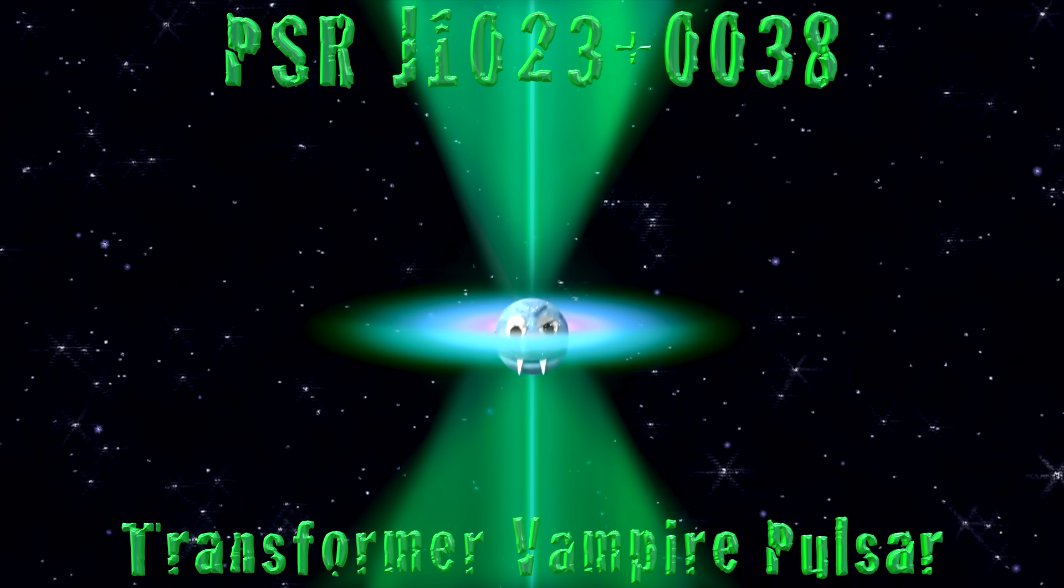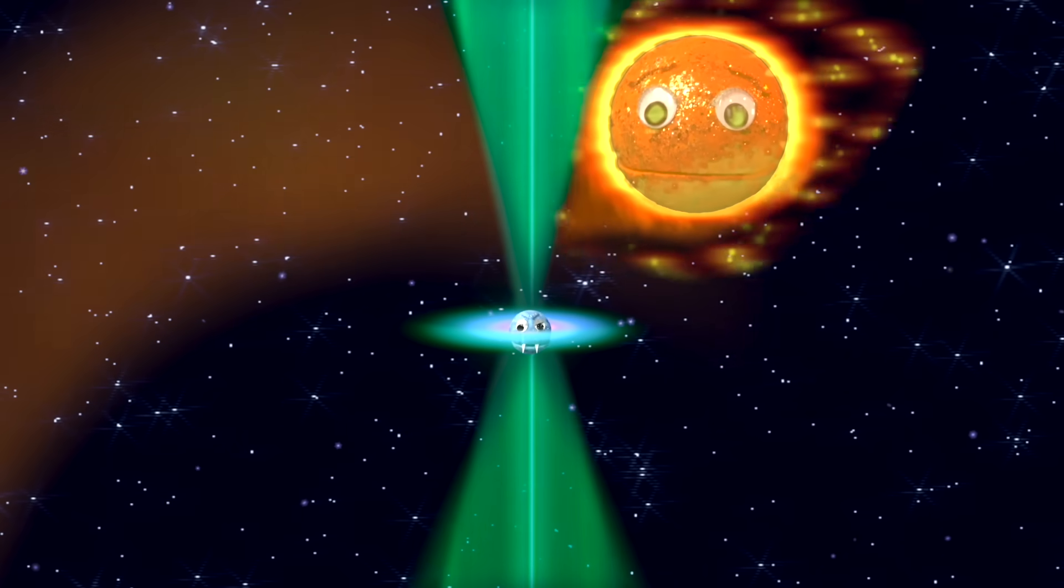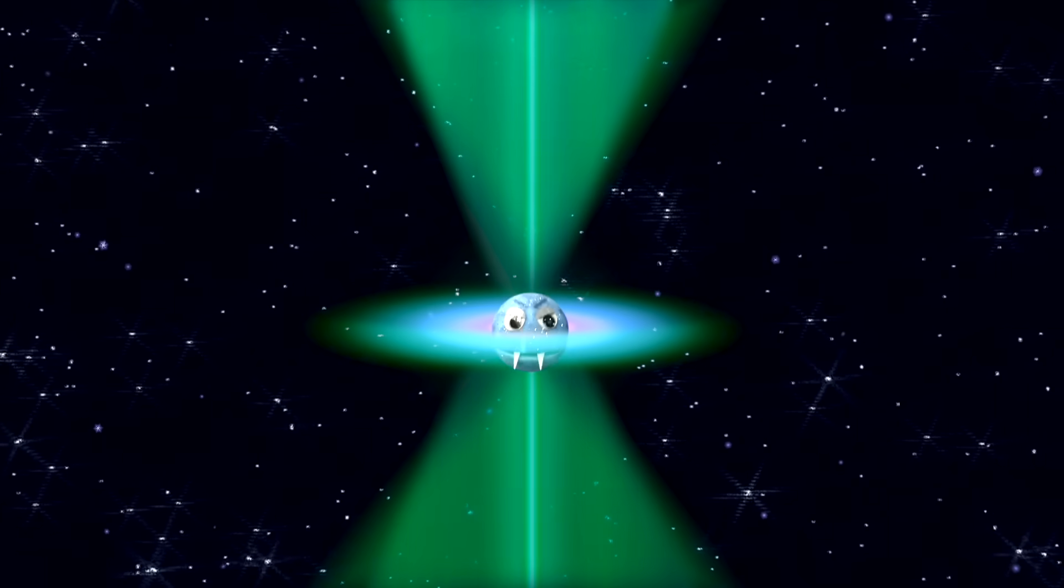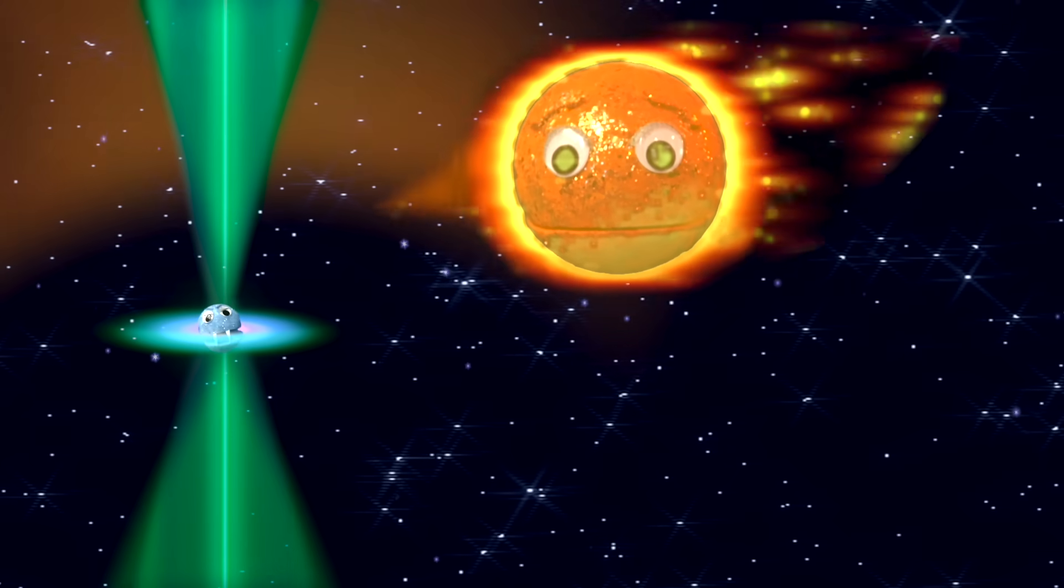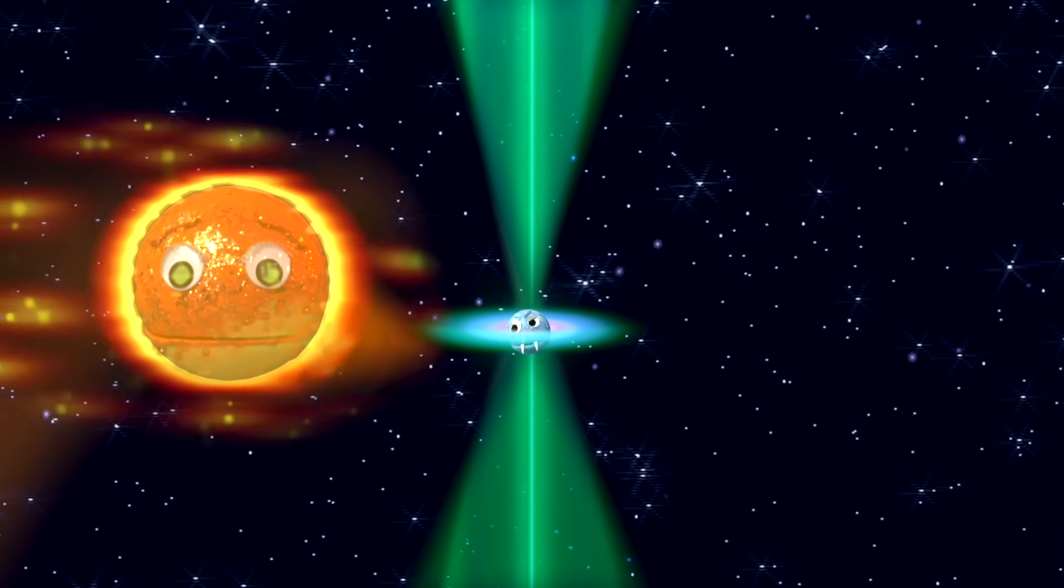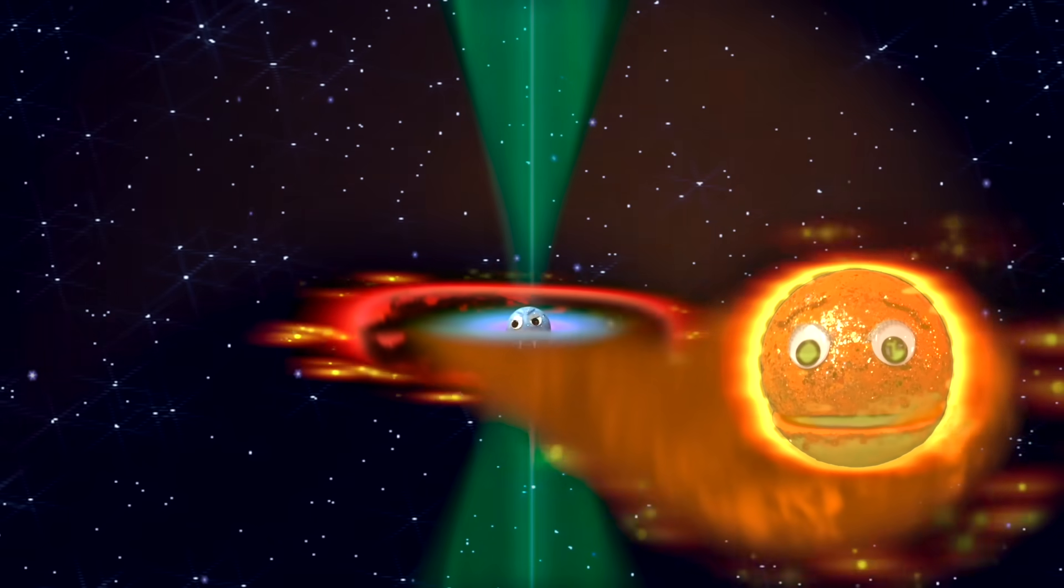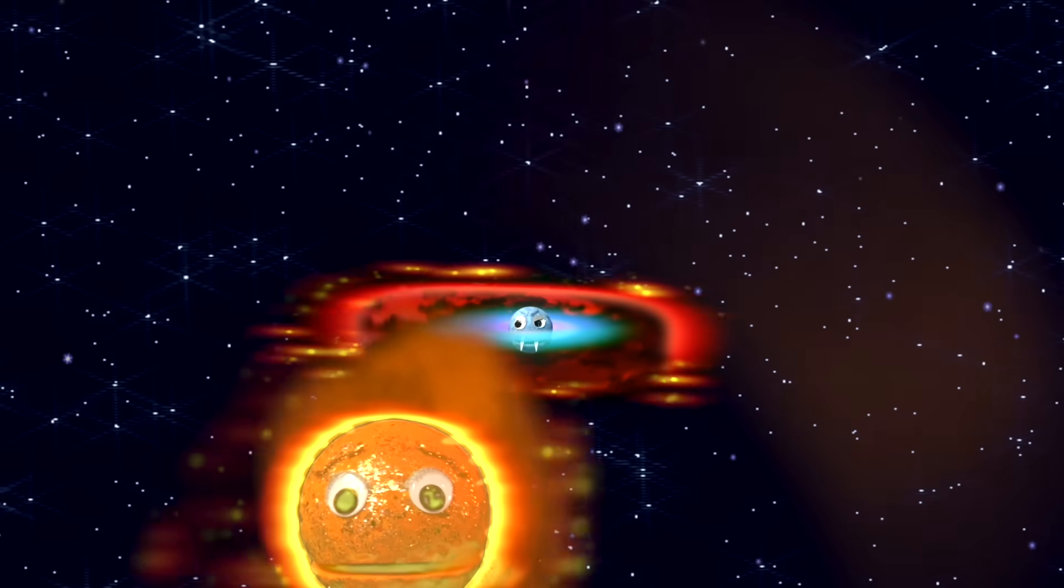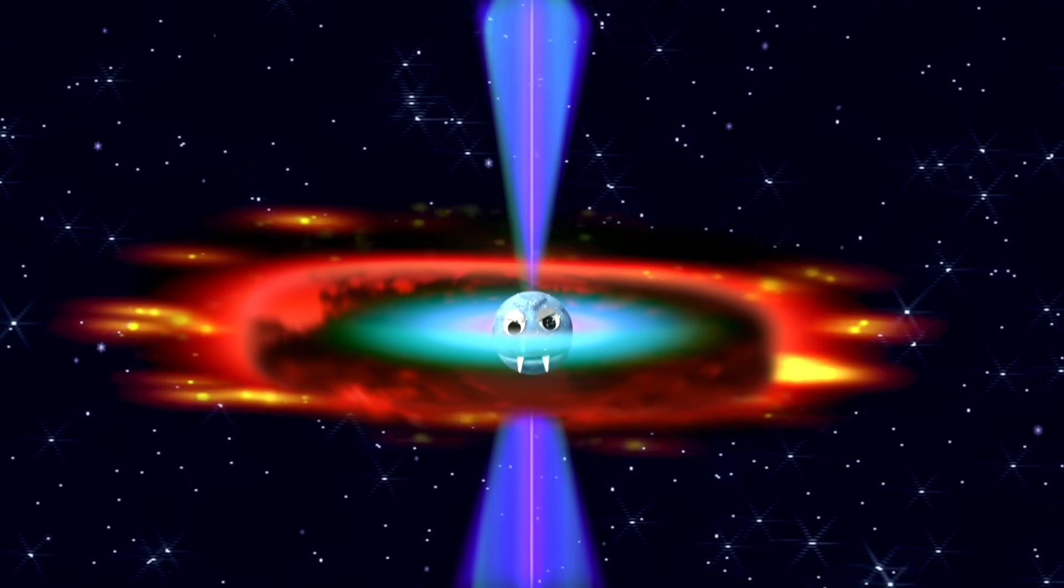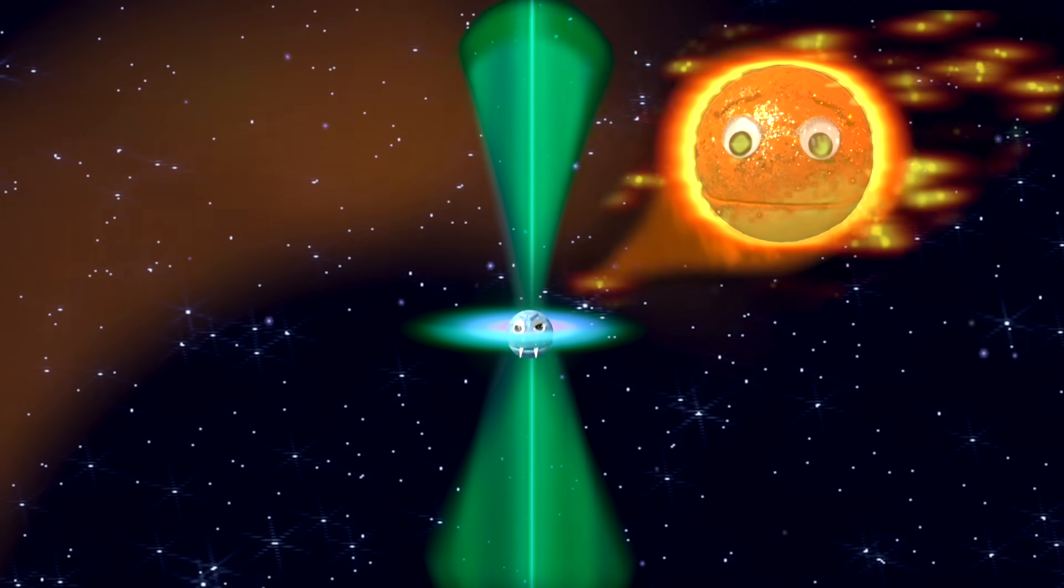PSRJ1023 plus 0038, a transformer vampire pulsar. My companion and I orbit each other every 4.8 hours. A millisecond pulsar, I produce both a radio beam and high energy winds. My winds hold back the stream of gas that I'm siphoning from my companion. But when that gas stream surges, it creates an accretion disk around me. This disk causes my radio beam to turn off, or at least be obscured, you see. I begin accelerating some of the gases I'm stealing and eject them into two particle jets then. When all the gases are gone, we start the process all over again.